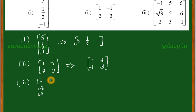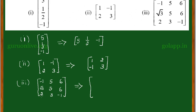Similarly, for the third one, the given matrix is [-1, √3, 2; 5, 5, 3; 6, 6, -1]. The transpose of this matrix is obtained as follows: the first column becomes the first row — [-1, √3, 2]; the second column becomes the second row — [5, 5, 3]; and the last column becomes the last row — [6, 6, -1]. This is the transpose of the given matrix.